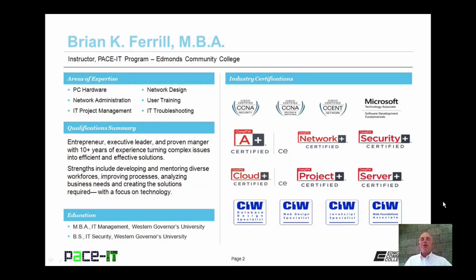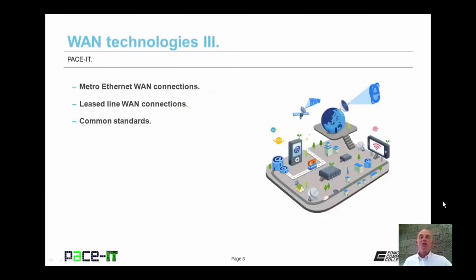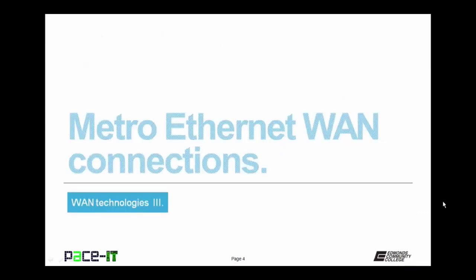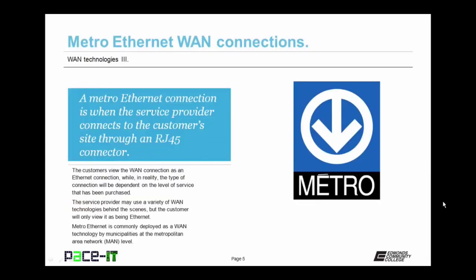Hello, I'm Brian Farrell, and welcome to PACE IT's session on WAN Technologies Part 3. Today I'm going to briefly discuss Metro Ethernet WAN connections, then move on to Leased Line WAN connections, and conclude with some common standards. I'm going to begin by discussing Metro Ethernet WAN connections. A Metro Ethernet connection is when the service provider connects to the customer's site through an RJ45 connector. The customer will view that WAN connection as an Ethernet connection, while in reality the type of connection will be dependent upon the level of service purchased.